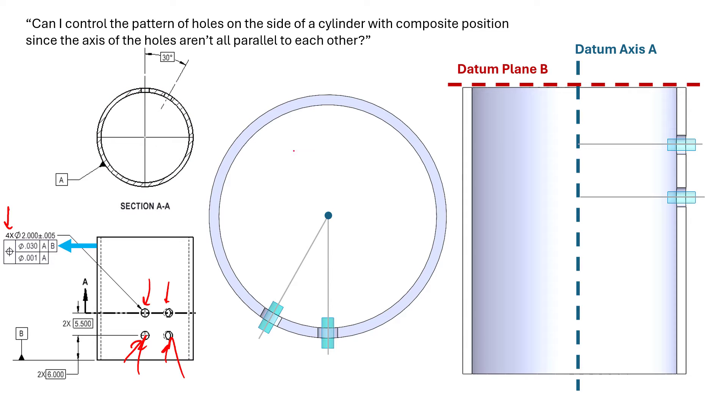Normally when we see position, we see it on a pattern of four holes on something like a square plate, and the axis of these four holes are all parallel to each other. We can easily control these four holes as a pattern using composite position tolerances and the pattern location in general back to a datum reference frame using the upper frame in that composite.